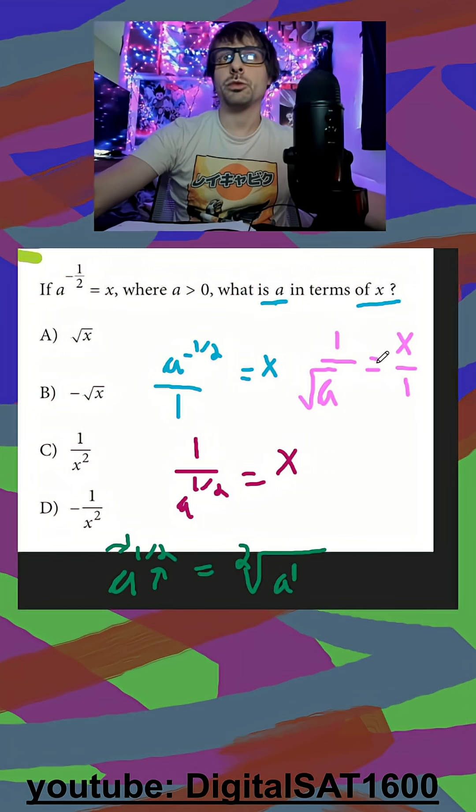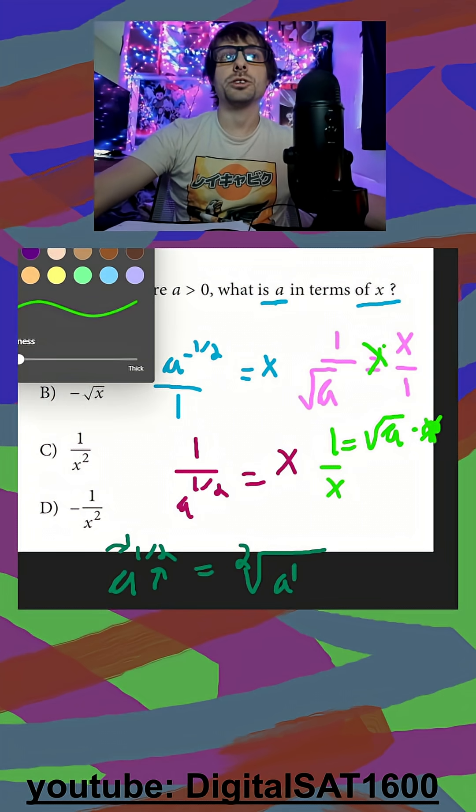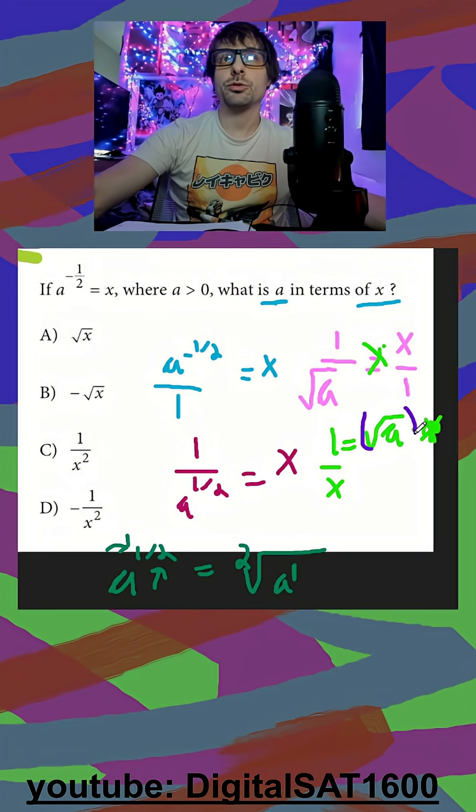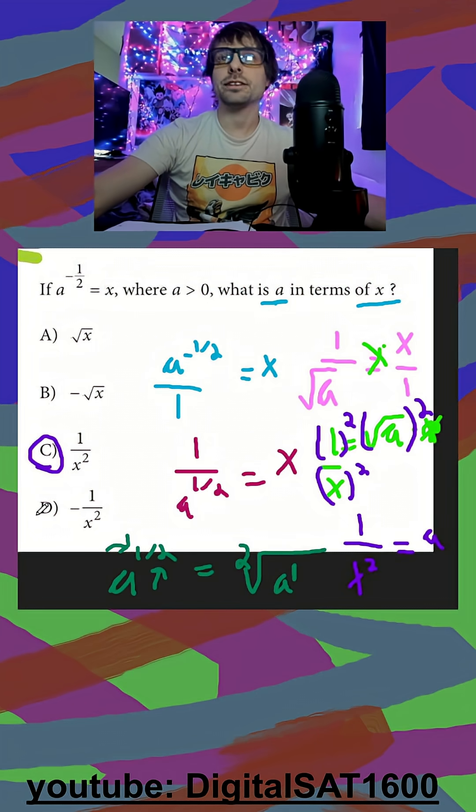We set this up with fractions because I want to cross multiply. So it's going to be one is equal to square root of a times x. Divide both sides by x. And then finally, I just want to square everything to get rid of that square root. So square this, square this, and square this. And finally, it's just one over x squared is going to be equal to a. And I can see that's that choice here.